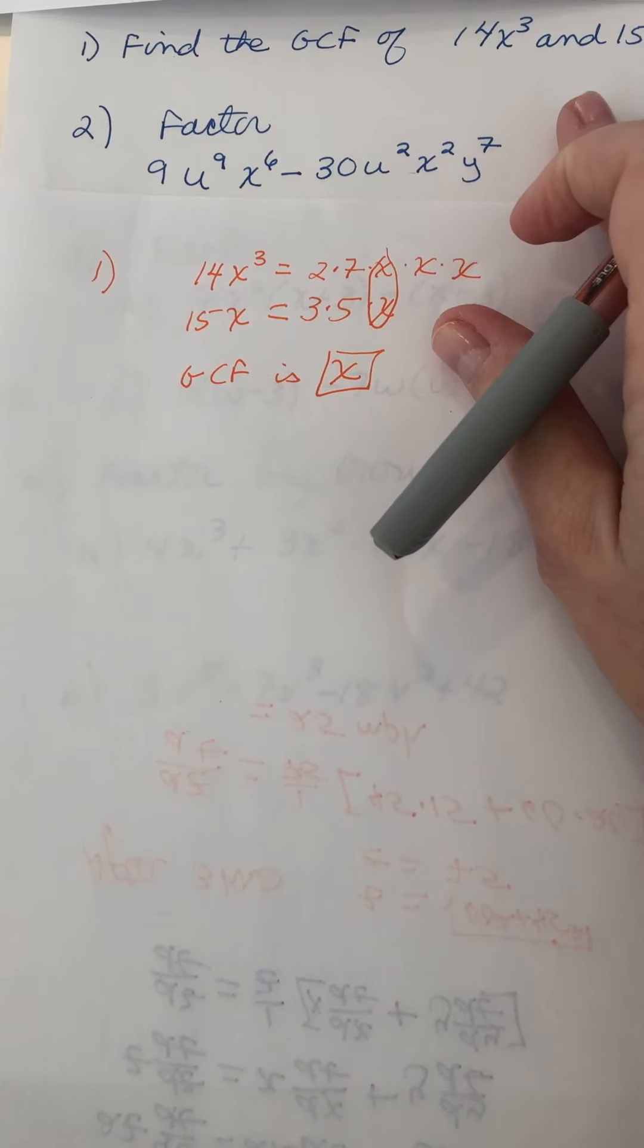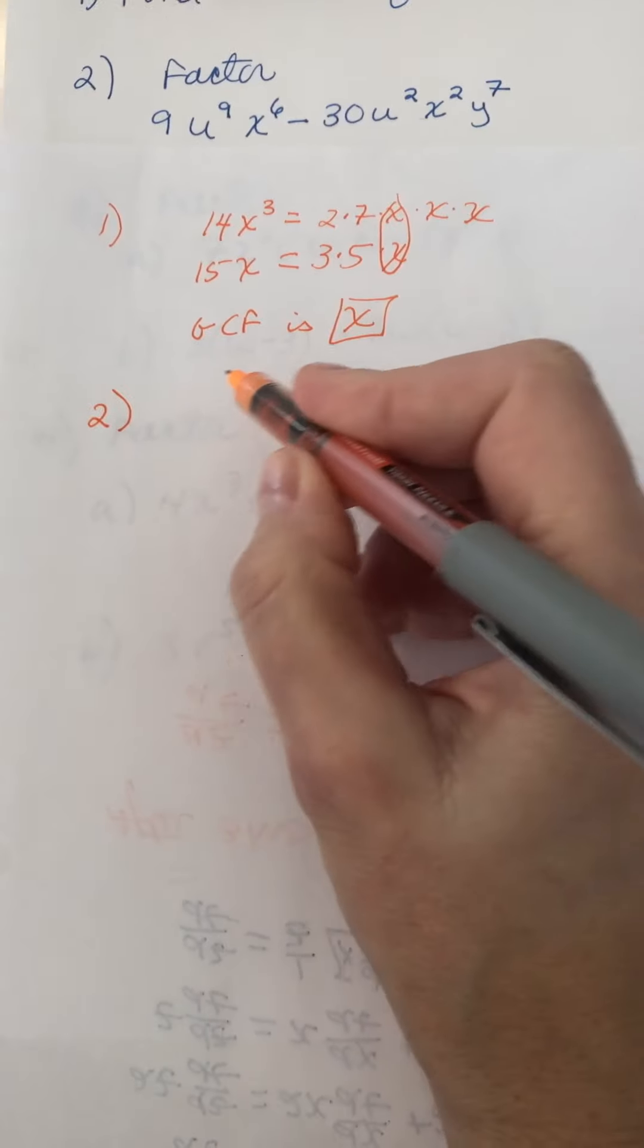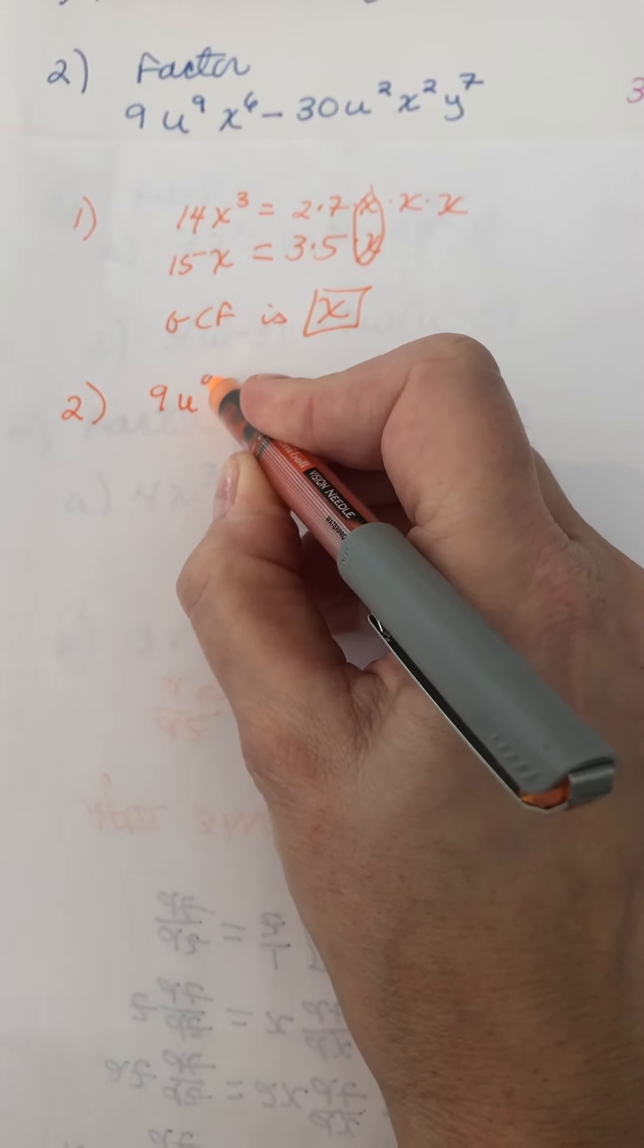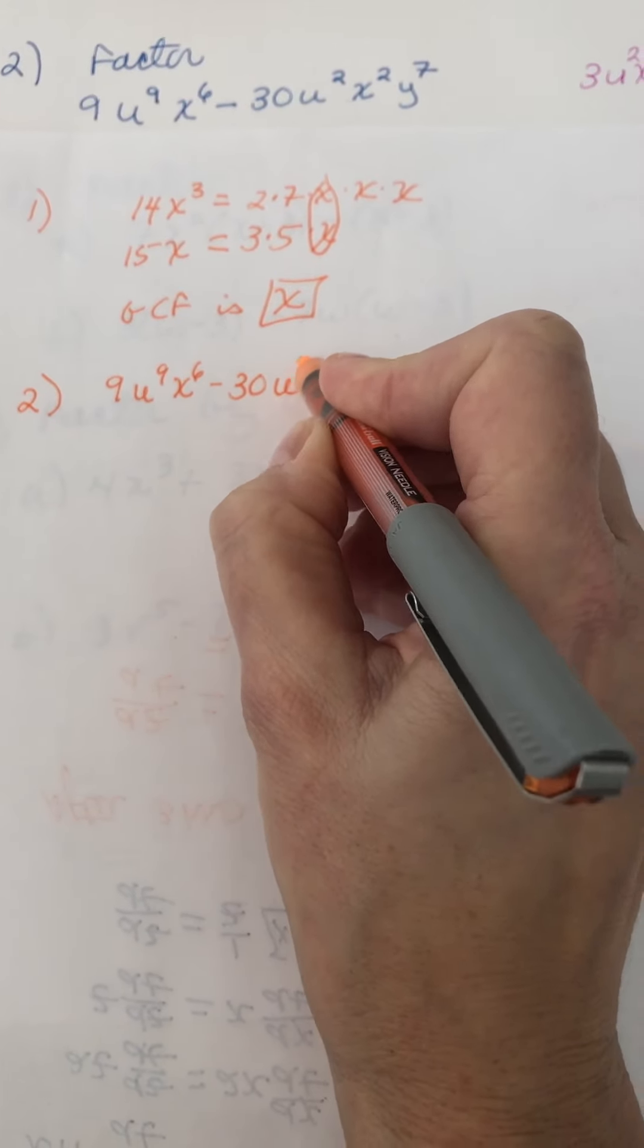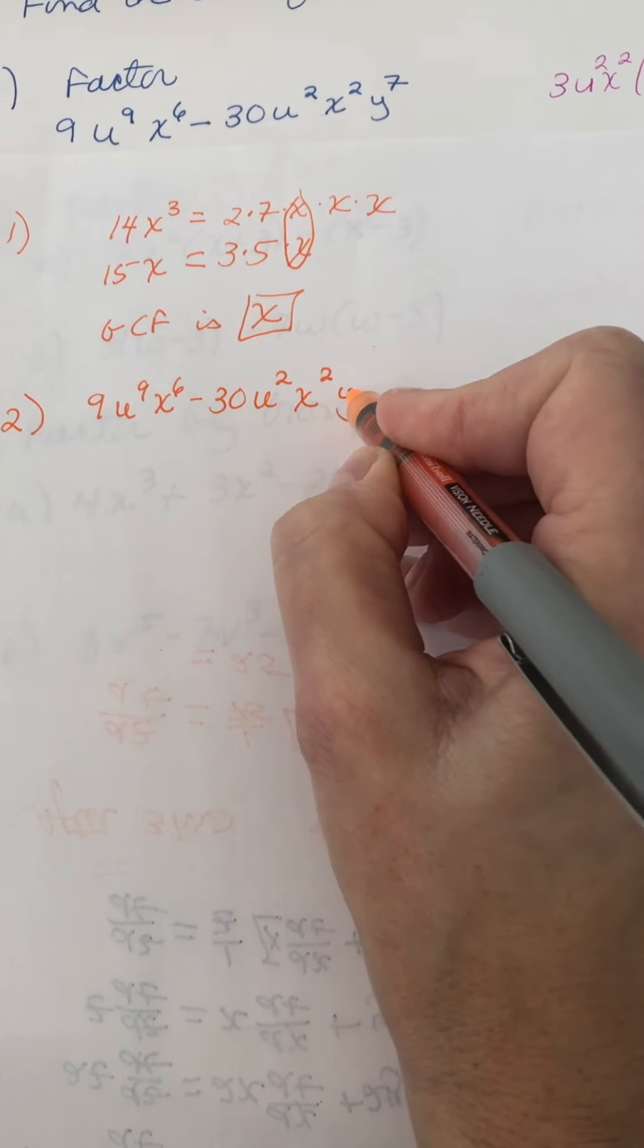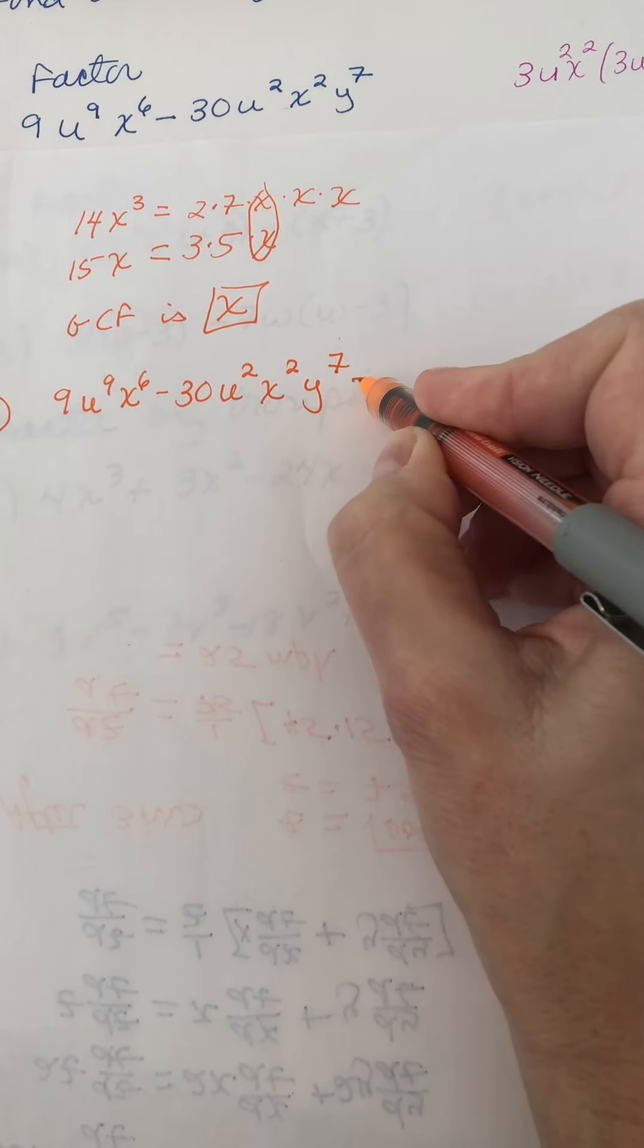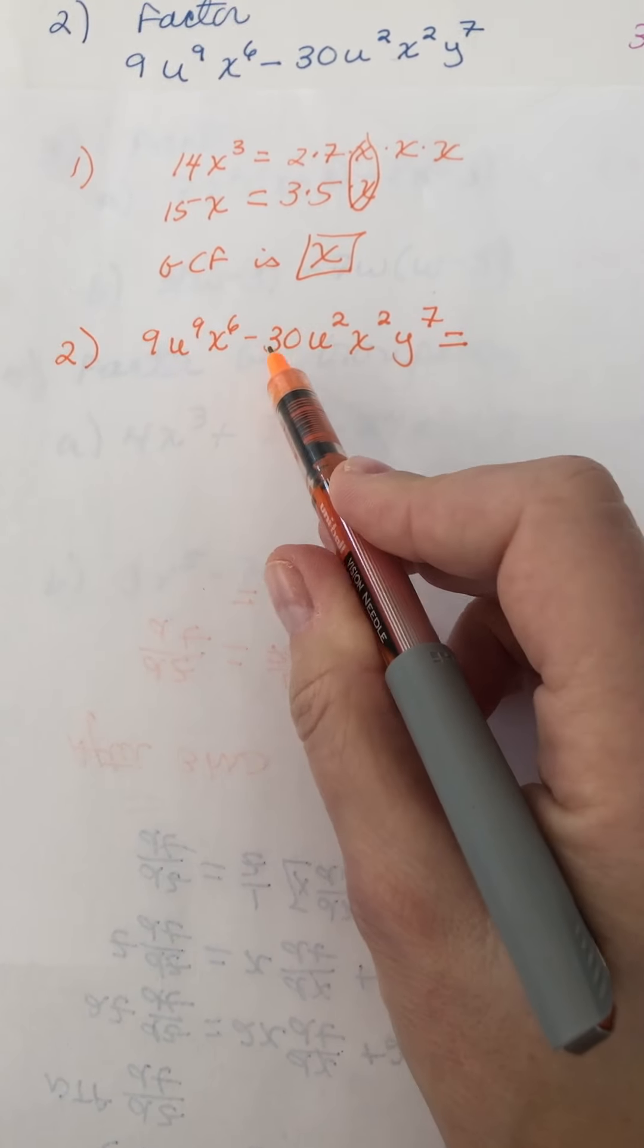Okay, for this one we're asked to actually factor. Let me just copy it here. What we want to do is factor out the greatest common factor, so it's kind of the inverse of multiplying.